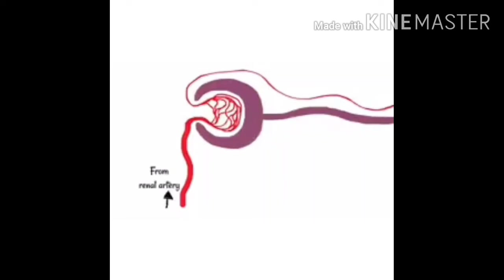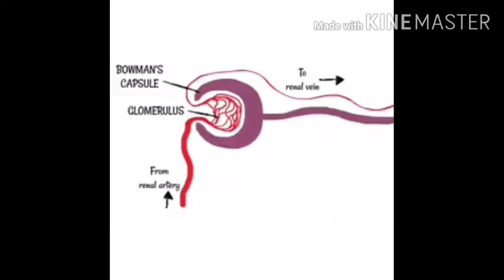Blood enters through a blood vessel that is relatively wide compared to the vessel leaving this area, which will eventually connect to the renal vein. In between is a capillary network known as the glomerulus. Because the entering vessel is wider, pressure builds up inside the glomerulus. The area surrounding this is known as the Bowman's capsule, or renal capsule, and the high pressure forces material from the glomerulus into the Bowman's capsule.